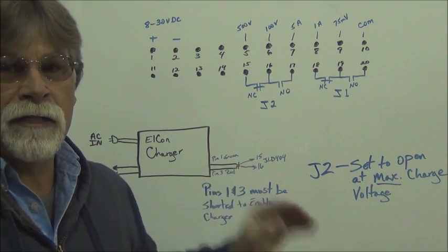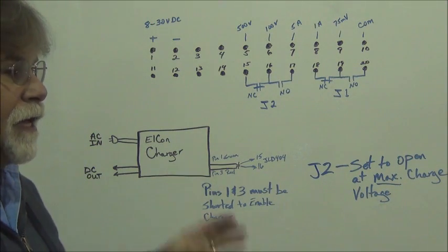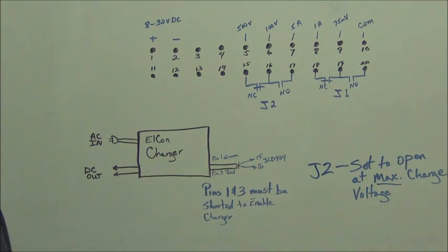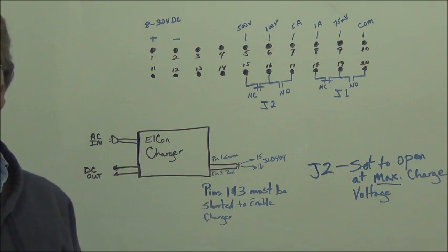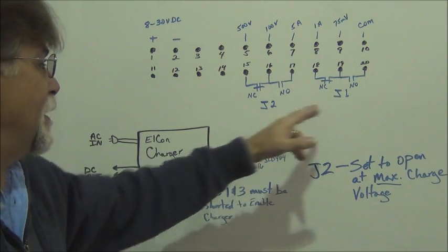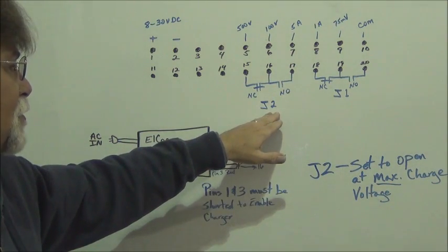It's just a redundancy. It's a safety feature so that if the internal programming of our charger failed to turn off this charger at the specified voltage, then the J2 on the JLD-404 will shut it off. You could make it either one, in this example I'm just using J2.